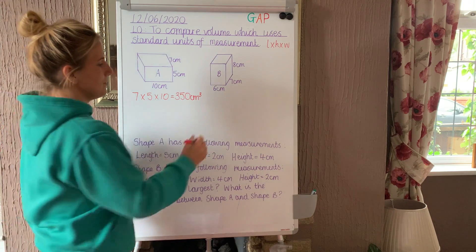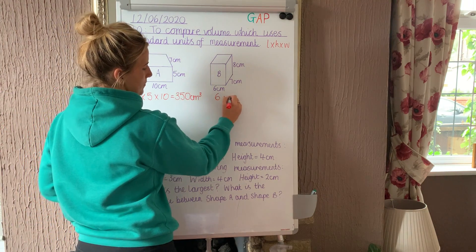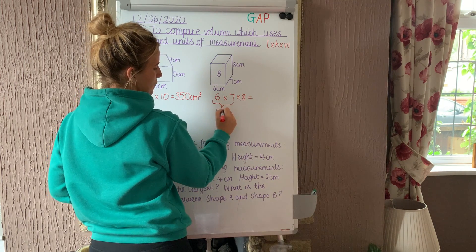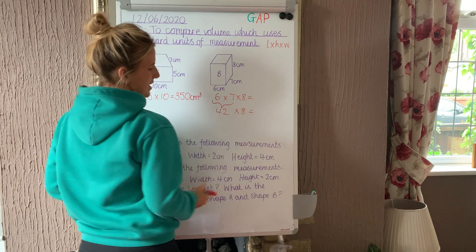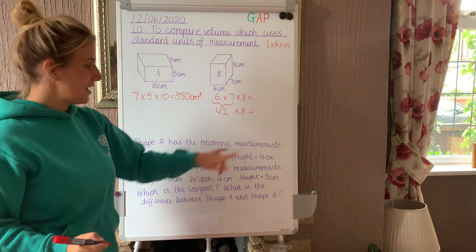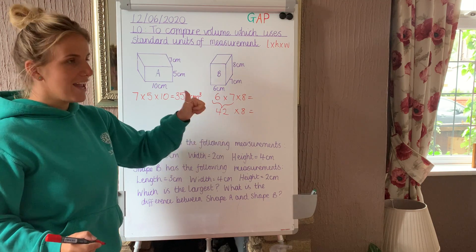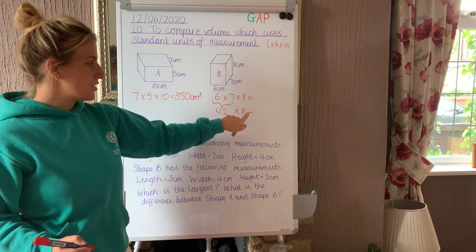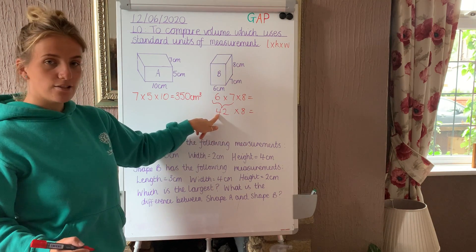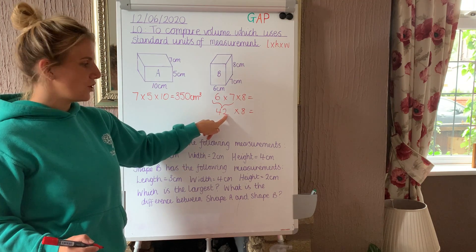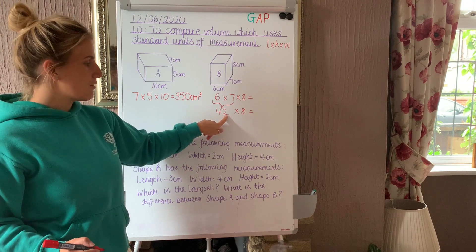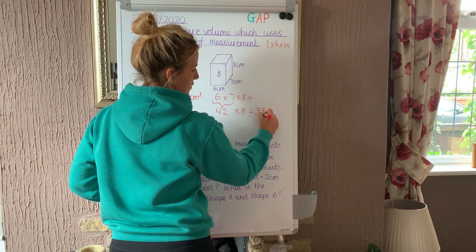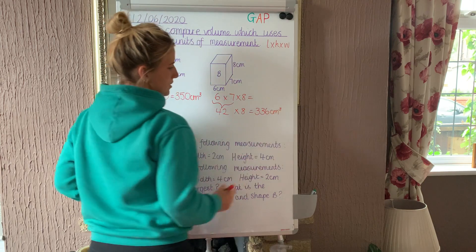And then for shape B, we need to do 6 times 7 times 8, in any order. 6 times 7 is 42, and 42 times 8. I can partition that: 8 times 40 is 320, and 8 times 2 is 16. So 320 plus 16 gives me 336 centimetres cubed.